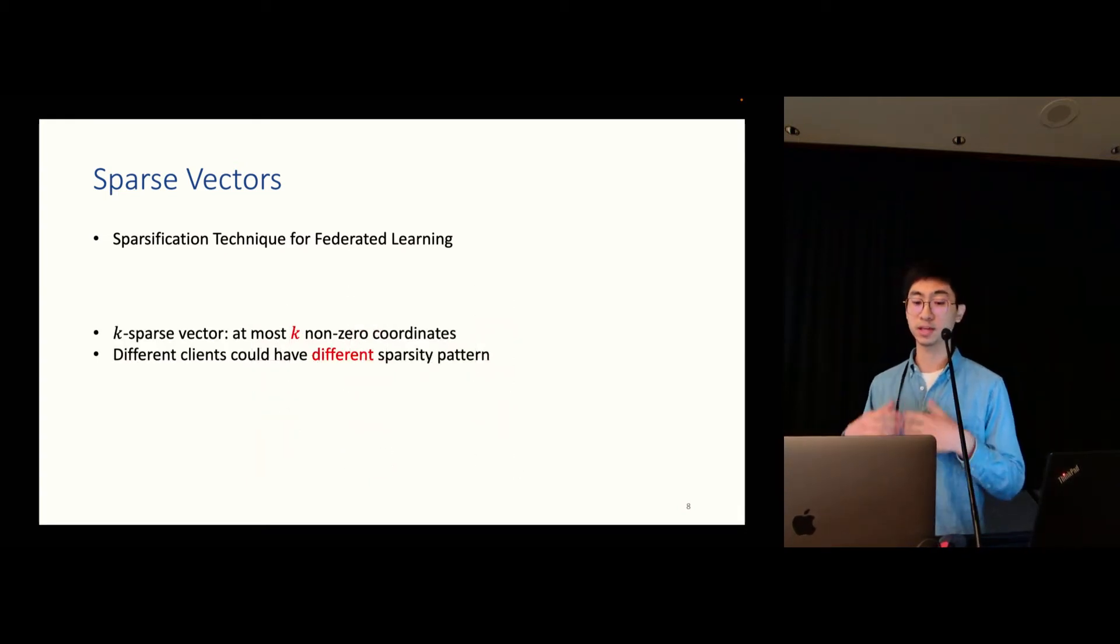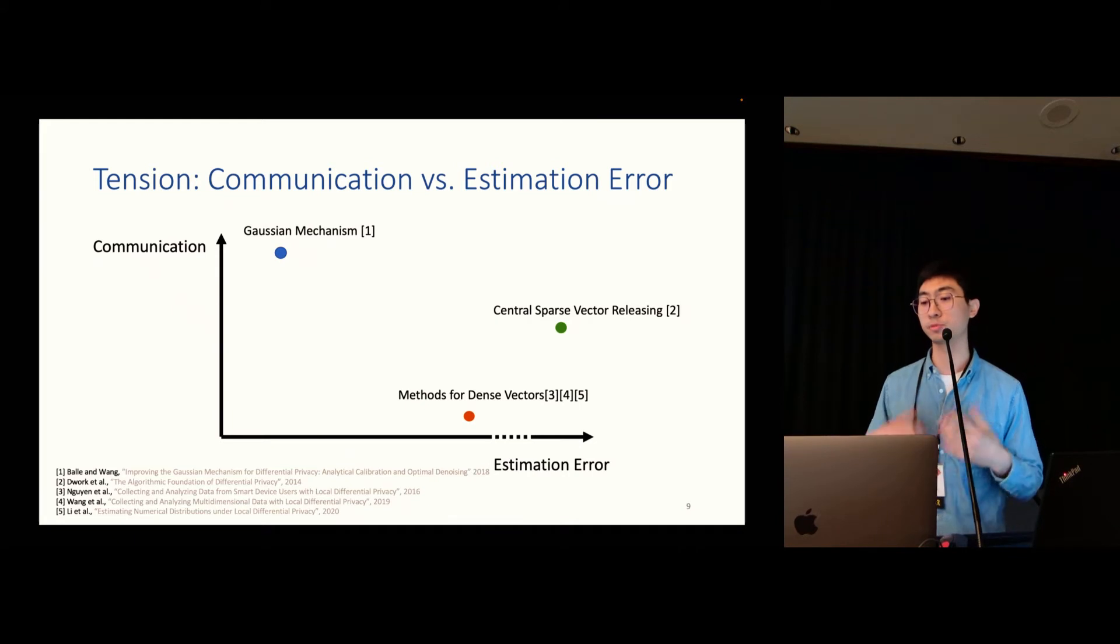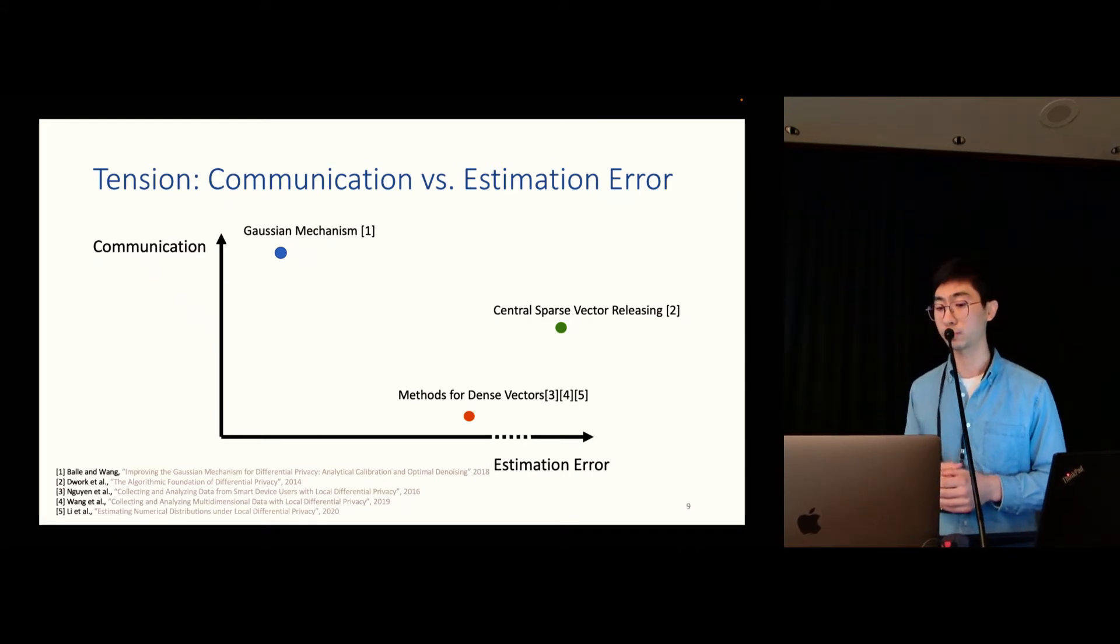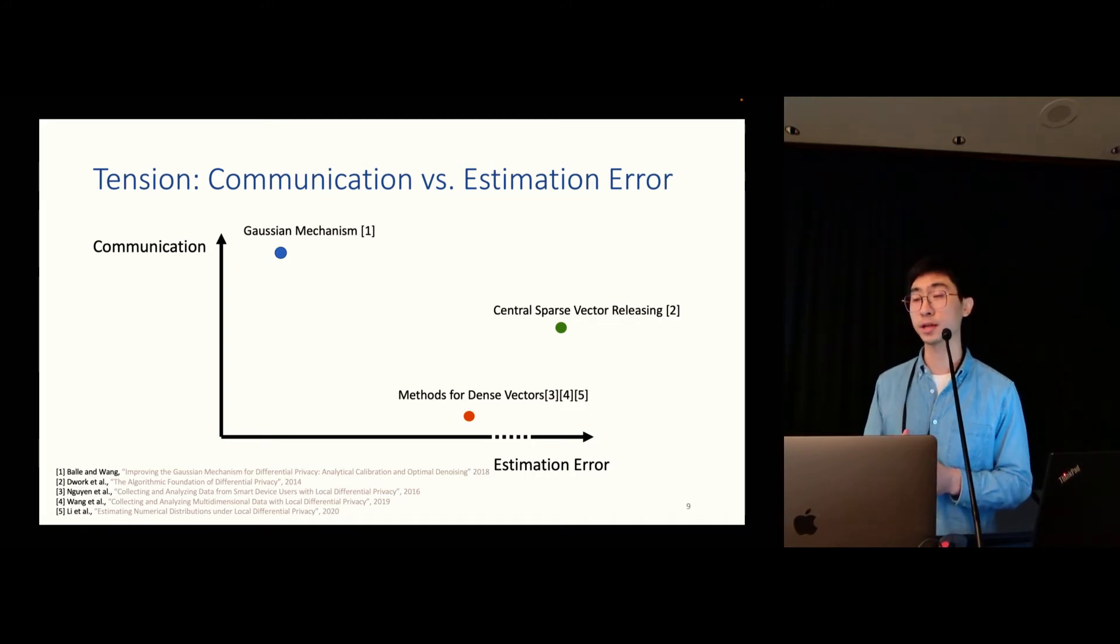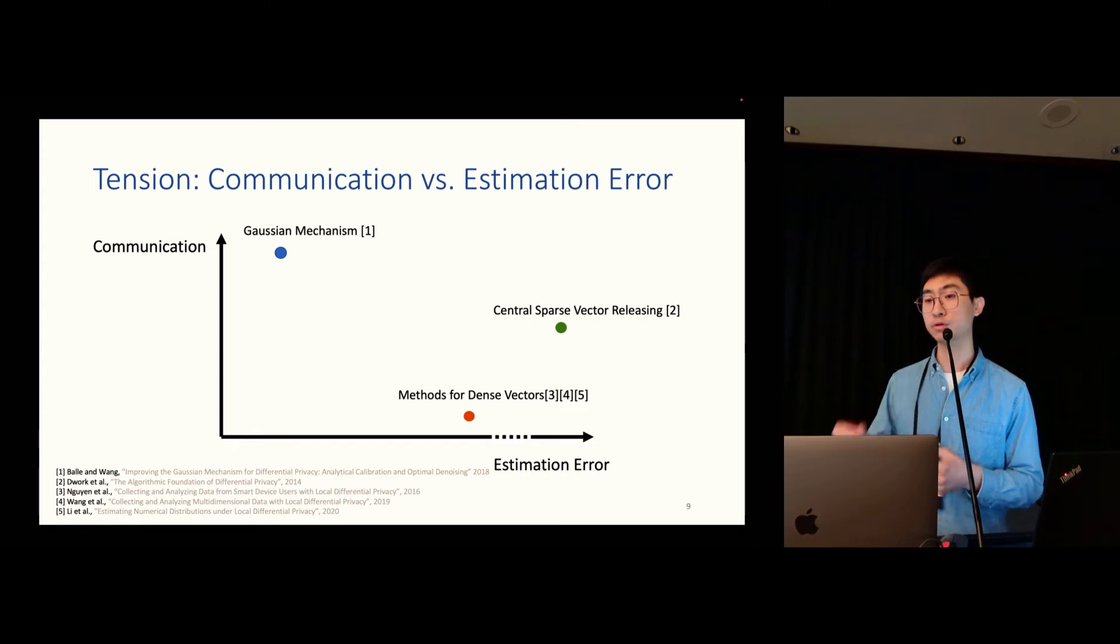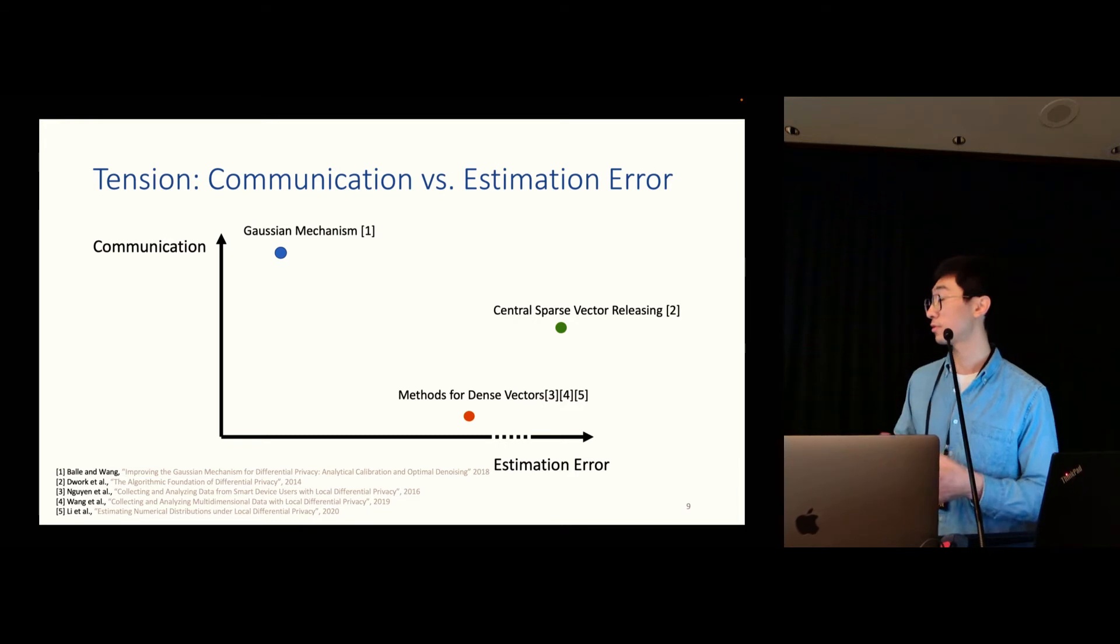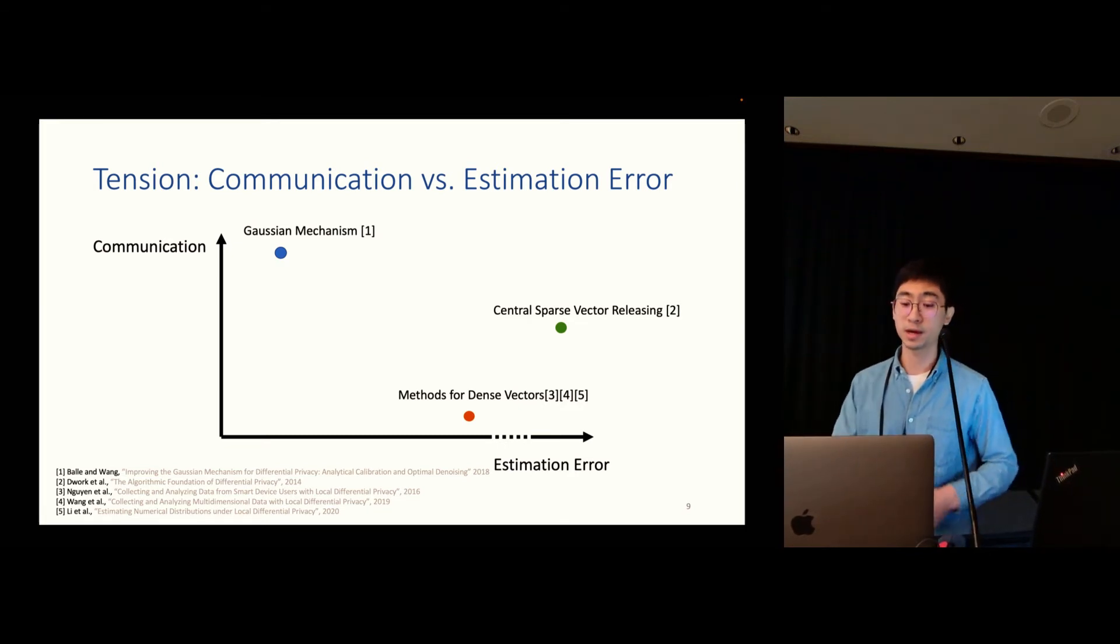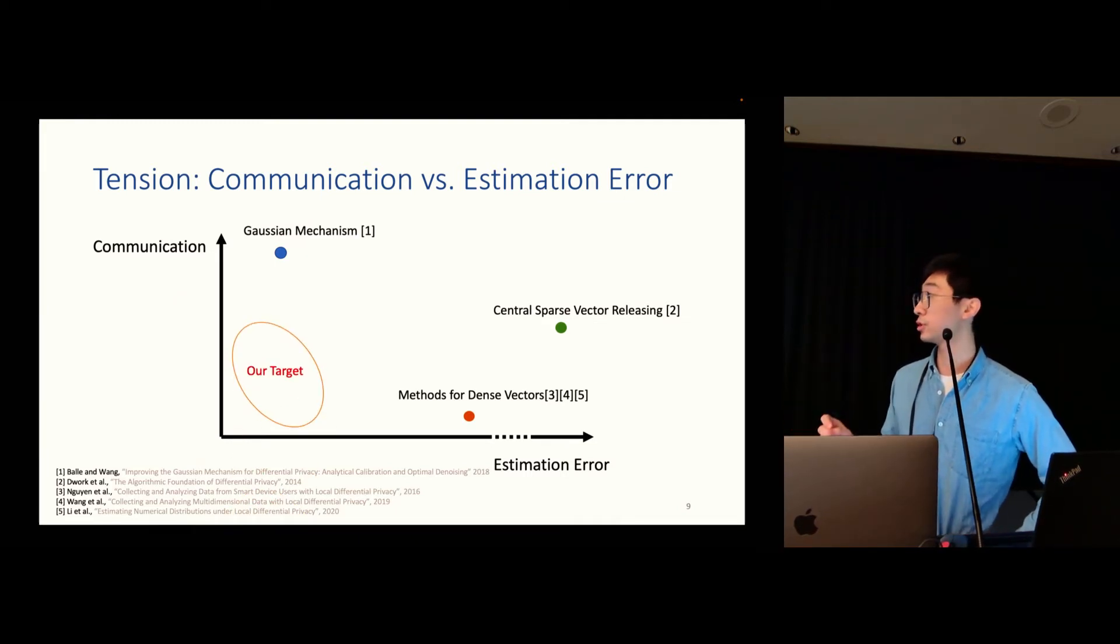So in our paper, we focus on k-sparse vector. It means there are at most k non-zero coordinates in the same vector. And we assume different clients could have different sparsity patterns. There is actually a tension between communication versus the estimation error for private vector aggregation problem, especially the sparse case. The canonical way to handle a vector in privacy literature is the Gaussian mechanism. But the Gaussian mechanism will add Gaussian noise to each coordinate in the same vector, making the output not sparse anymore. So we actually lose the advantage of the communication. There is also some central sparse vector releasing technique, but they are more suitable in the central setting instead of the aggregation setting. There are also methods for dense vectors, but those methods are not utilizing sparsity very well, making them have non-optimal error. So our target is to have a low communication and low estimation algorithm.